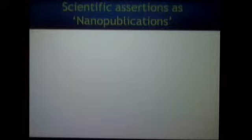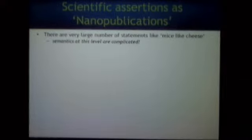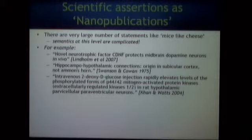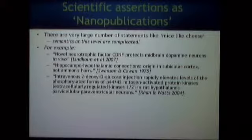That's the basic premise of the model. Let's think of nanopublications as simply collating and tracking a whole bunch of different assertions such as 'mice like cheese.' The trouble is the semantics are very, very complicated. If you look at titles of papers for the kinds of assertions people make in real scientific articles, it can get hairy. For example: 'Novel neurotrophic factor CDNF protects midbrain dopaminergic neurons in vivo' — just a Parkinson's study published in Nature.